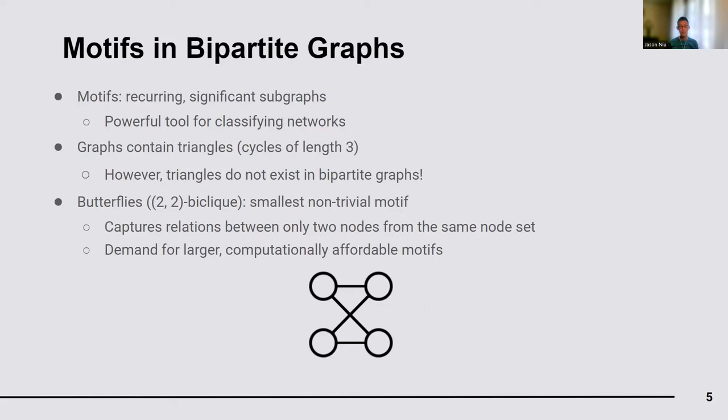Therefore, alternative motifs have been proposed for bipartite graphs, such as the butterfly, which is a four-cycle as shown in the figure below. However, butterflies capture the higher-order relations between only two nodes from the same node set. There is a need to go for larger bipartite motifs which can model higher-order relations while being computationally affordable.